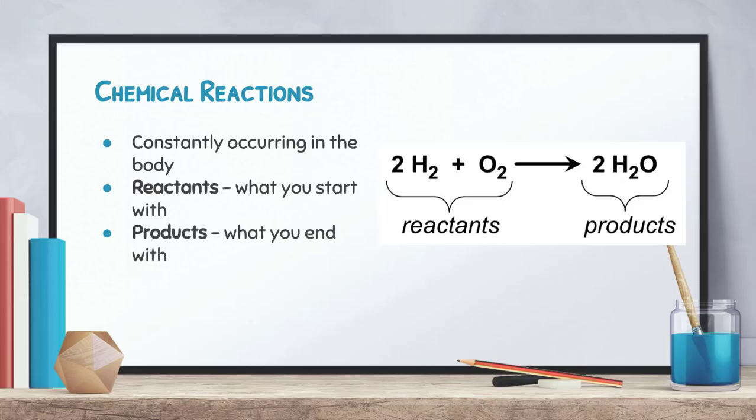Chemical reactions are constantly occurring inside of your body; without them you would not be able to survive. They're occurring on a very small level, but there are so many of them that a lot of the energy you expend on a daily basis is simply used to keep these chemical reactions going. When we look at chemical reactions from a chemistry standpoint, we start with our reactants, which are to the left of the arrow, and our products are what we end with on the right side — reactants react and form our products.